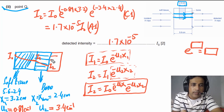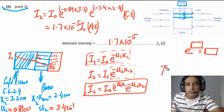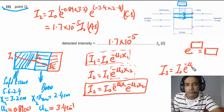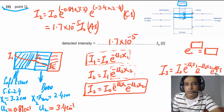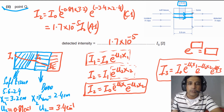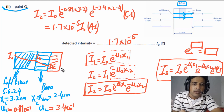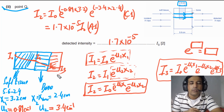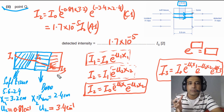This approach can be extended to three or more media. For three media, I₃ = I₀ × e^(−μ₁x₁) × e^(−μ₂x₂) × e^(−μ₃x₃). The same approach applies regardless of the number of media.